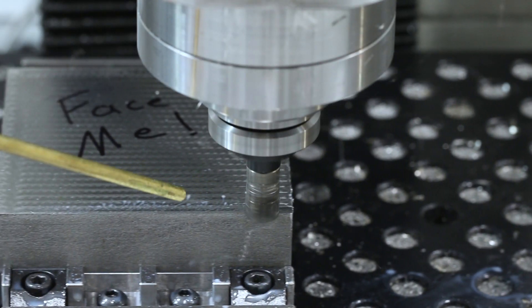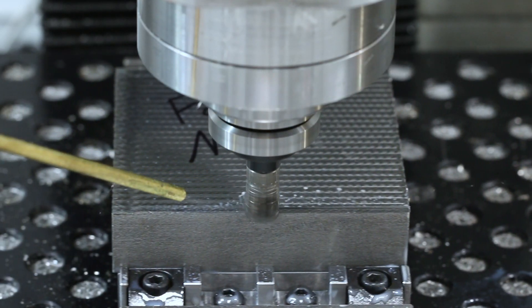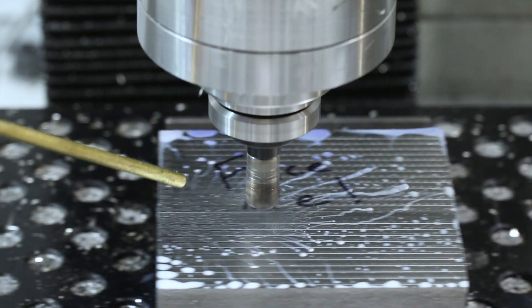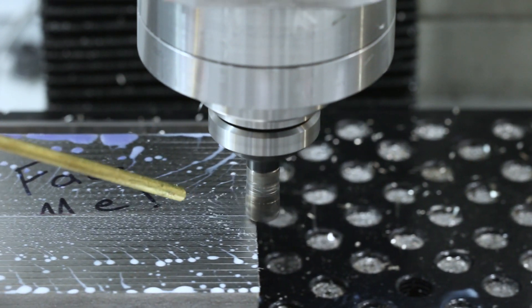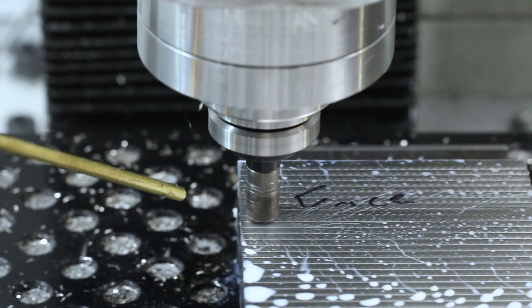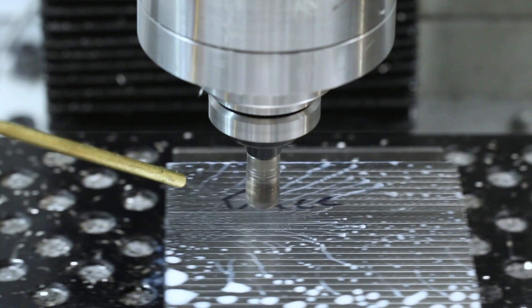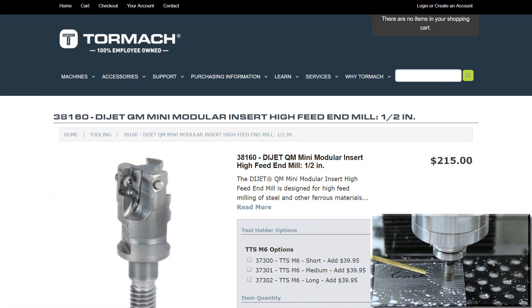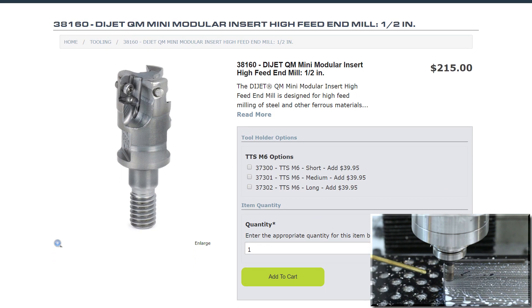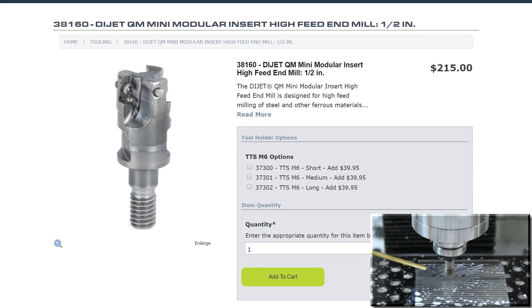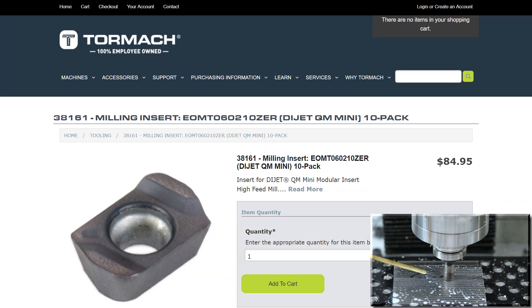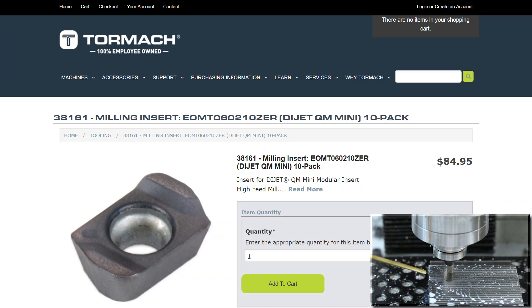Next up, let's face this part off. So this is what kicked my butt. Taking really thin axial depths of cut can cause some other problems like wearing out the tools or not being able to dump that heat into the chip, which can then cause that material to work harden and it will just destroy your tooling. We are using the Dijet QM Mini modular insert head. Tormach sells it here and we are using, and this is important, the high-feed mill. We'll put all the links in the video description for this as well as this CAM file. Those high-feed milling inserts are the first ones listed, part number 38161.